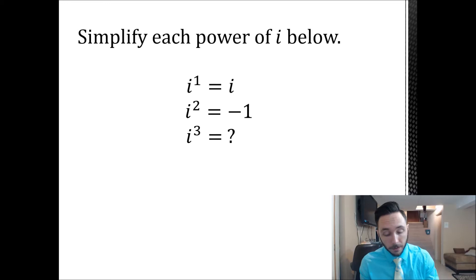i cubed, i to the third. Well, if you break it apart using its exponents, we know that one plus two is three. So that's just i times i squared. And I know that i squared is negative one. Negative one times i is negative i.